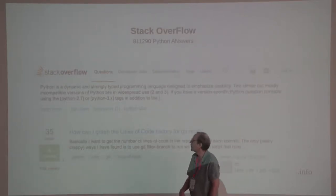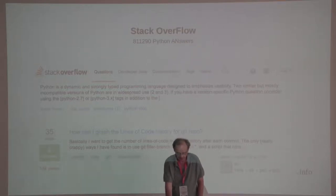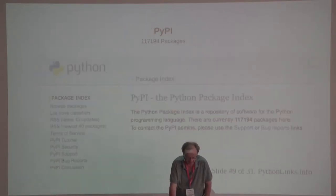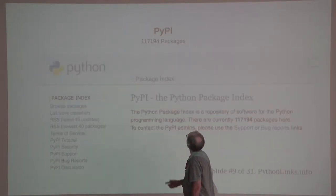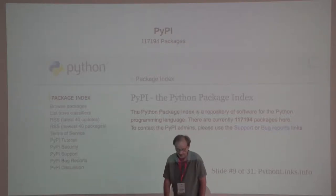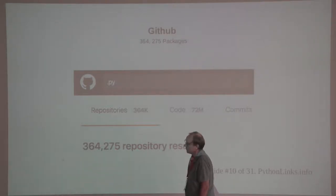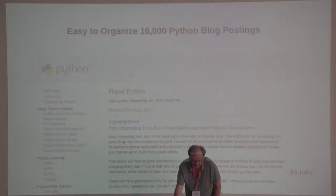When you go to Stack Overflow, there are 811,000 postings — again, a flat list. PyPI has 117,000 Python packages. GitHub has 364,000. Just these enormous lists.